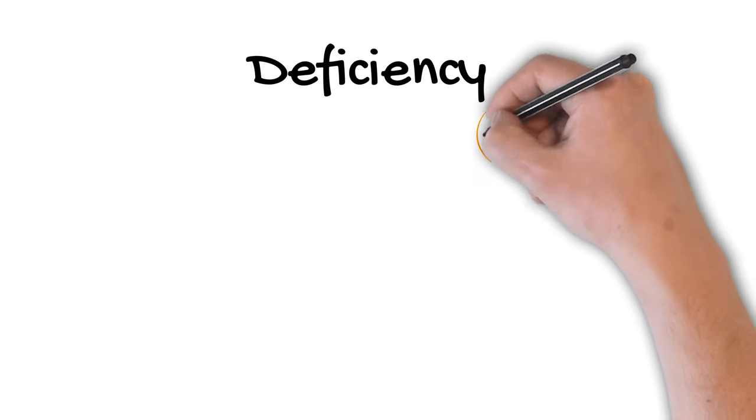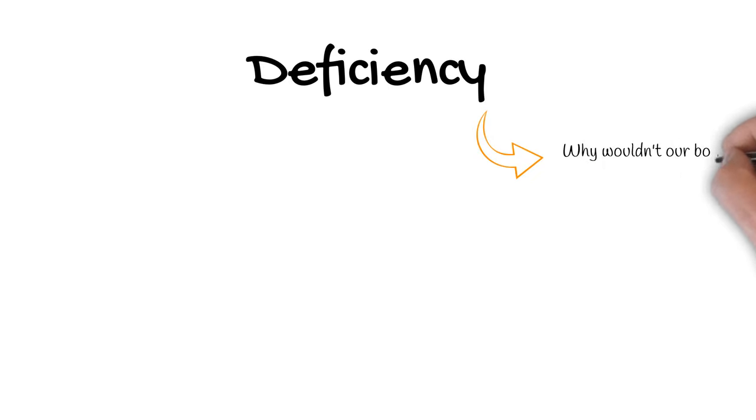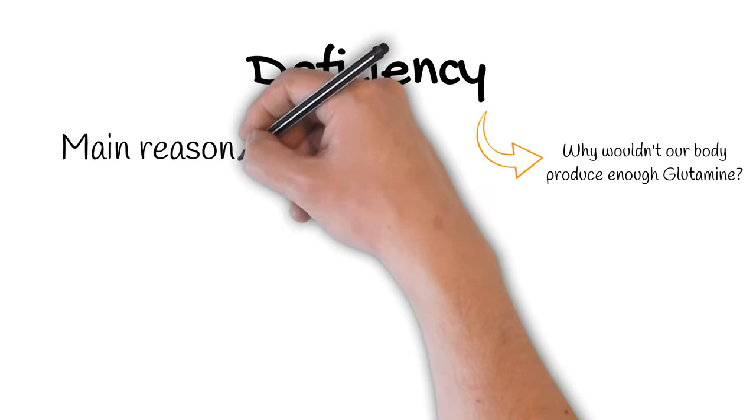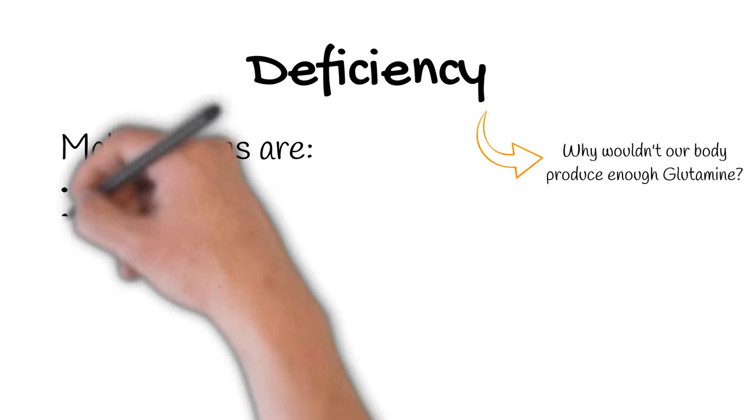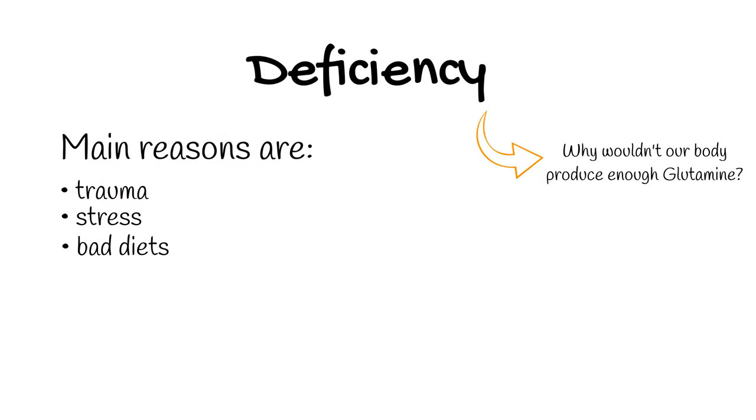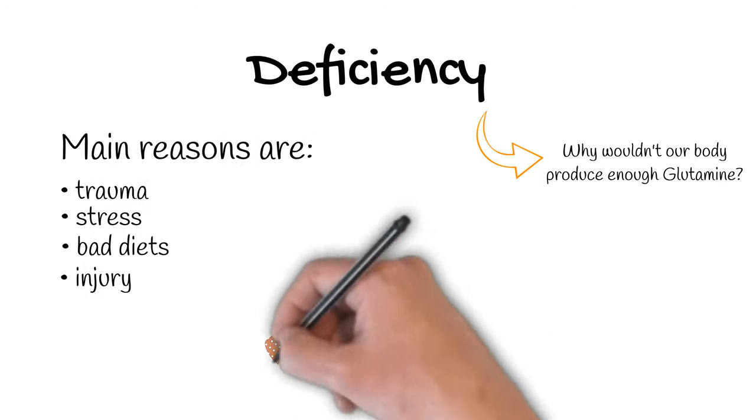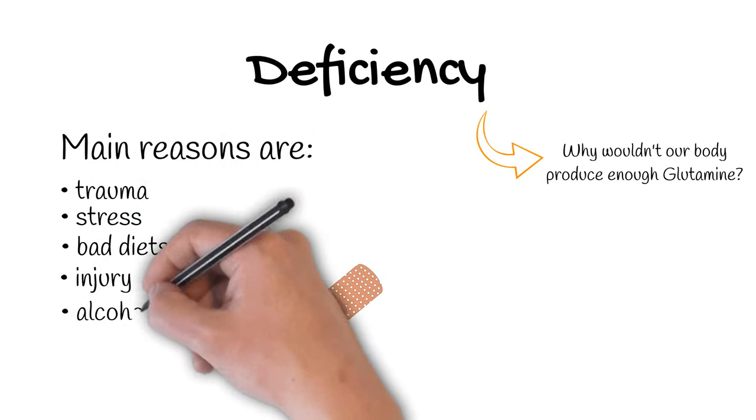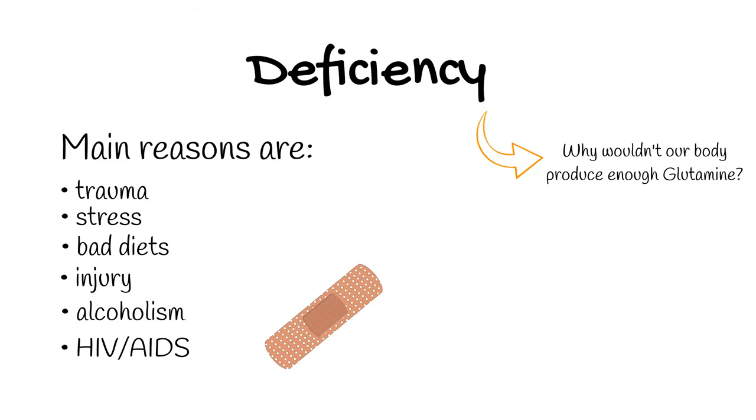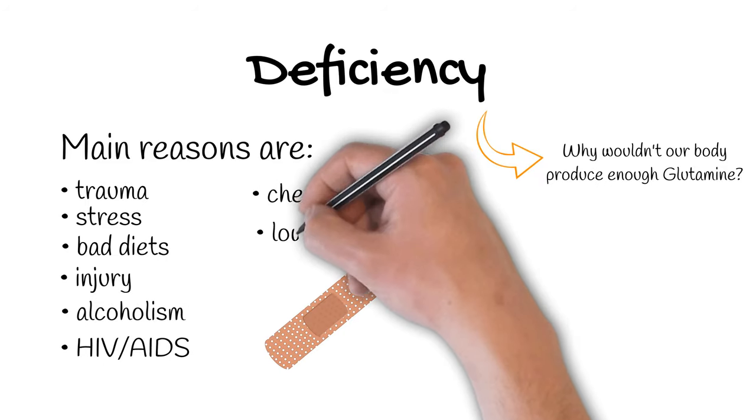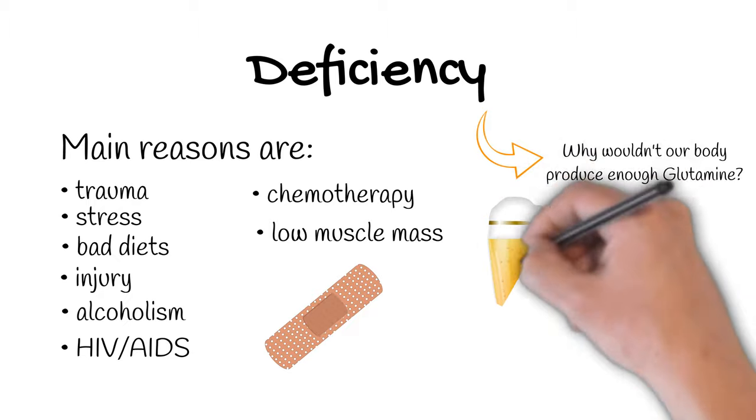So in which cases would our body not produce enough glutamine? Well many reasons could lead to glutamine production being too low. For example, trauma, stress, bad diets, injury, even alcoholism, infections, chemotherapy, and of course people with low muscle mass and people with HIV and AIDS might have issues.